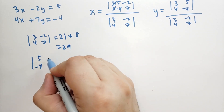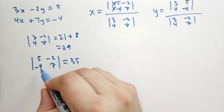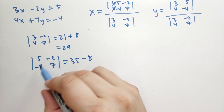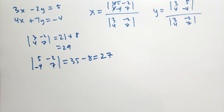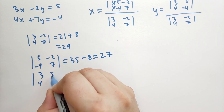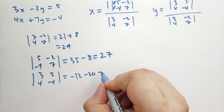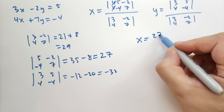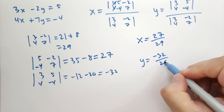For Y, the matrix [A, B; U, V] = [3, 4; 5, -4], and the determinant of that is -12 minus 20 = -32. So X equals 27 over 29, and Y equals -32 over 29. And that should work out for you.